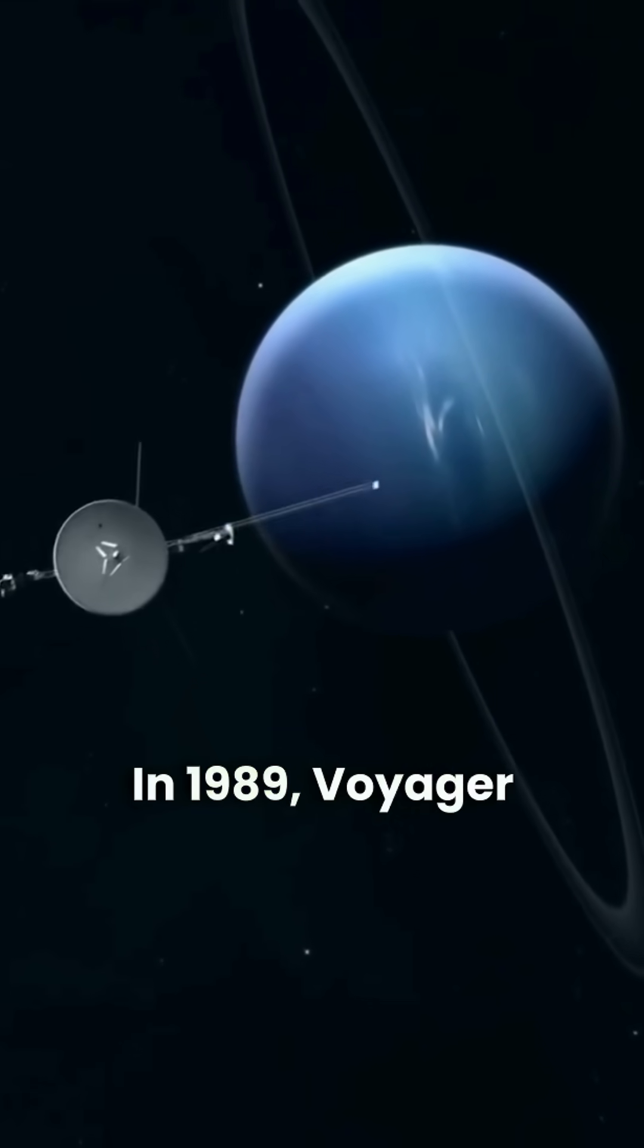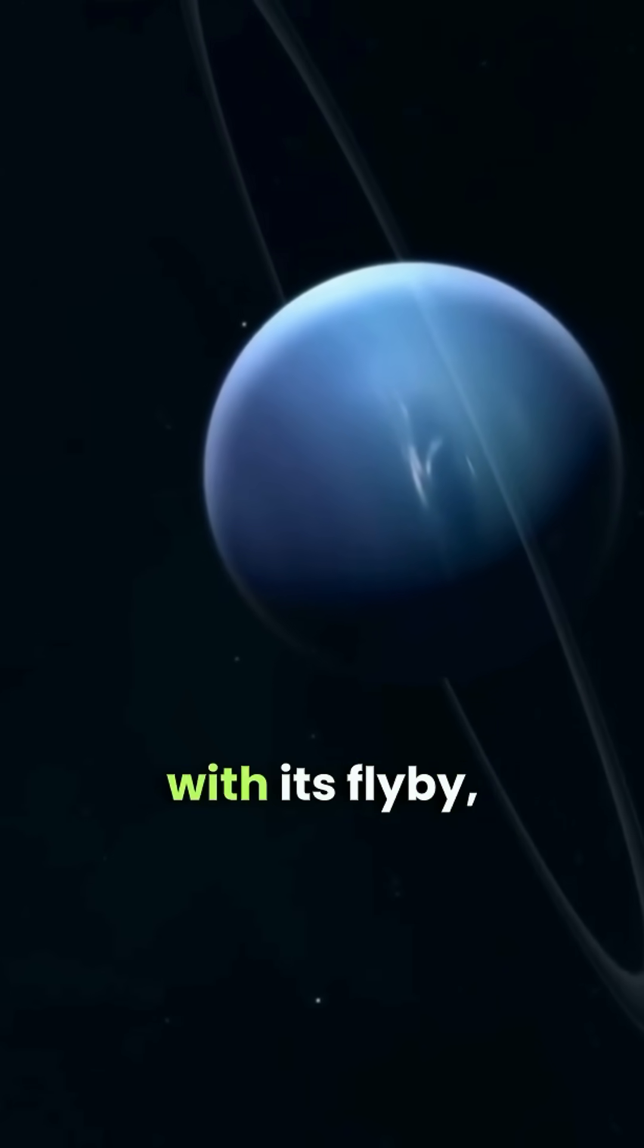Its unique retrograde orbit suggests it might have been captured by Neptune's gravity, making it a fascinating subject for exploration. In 1989, Voyager 2 made history with its flyby.